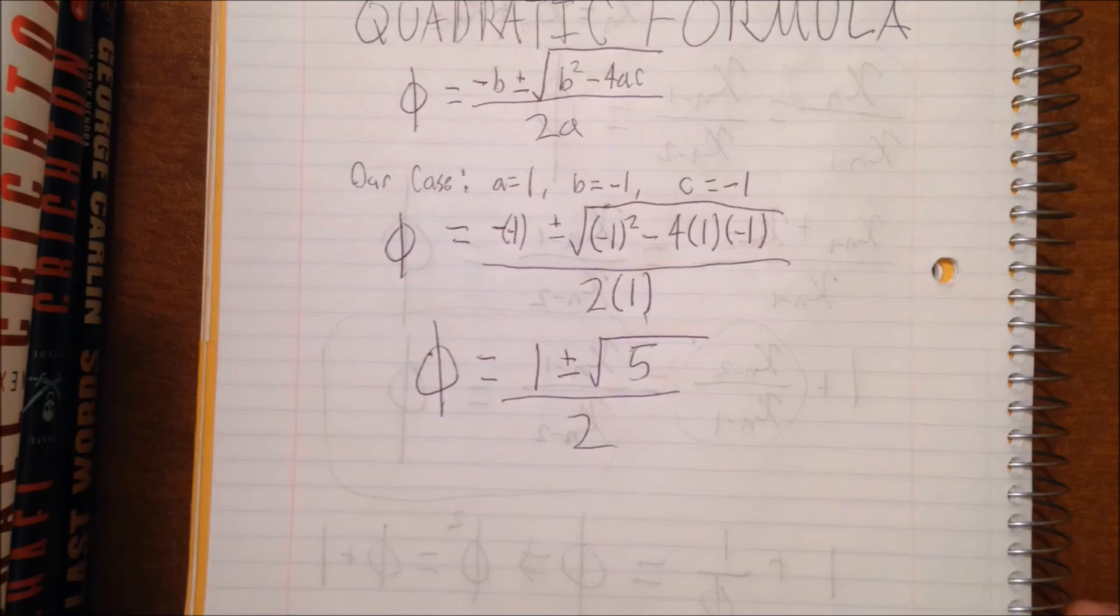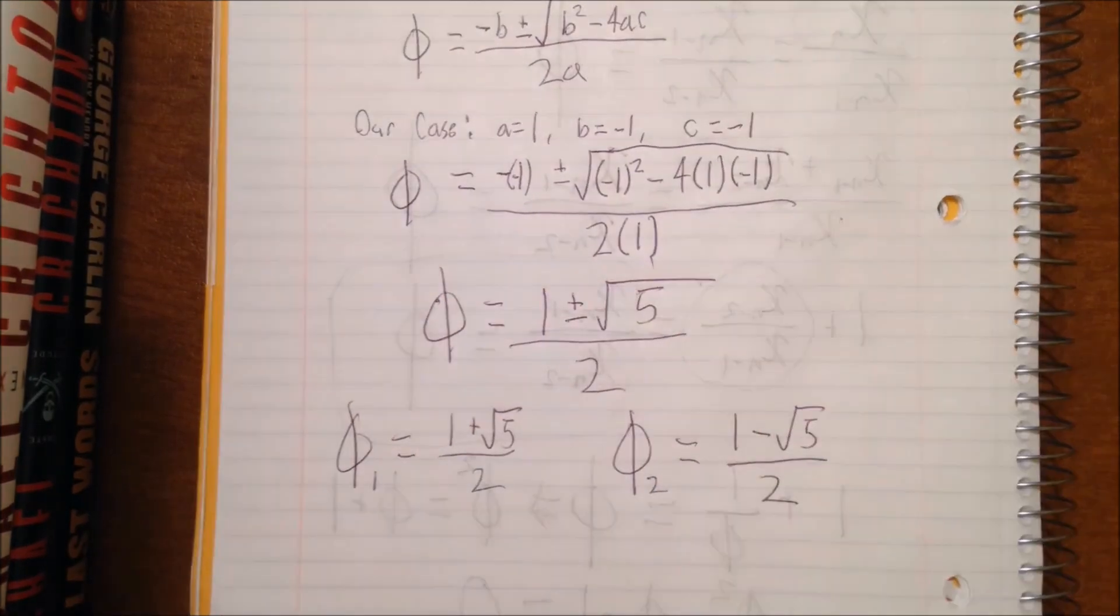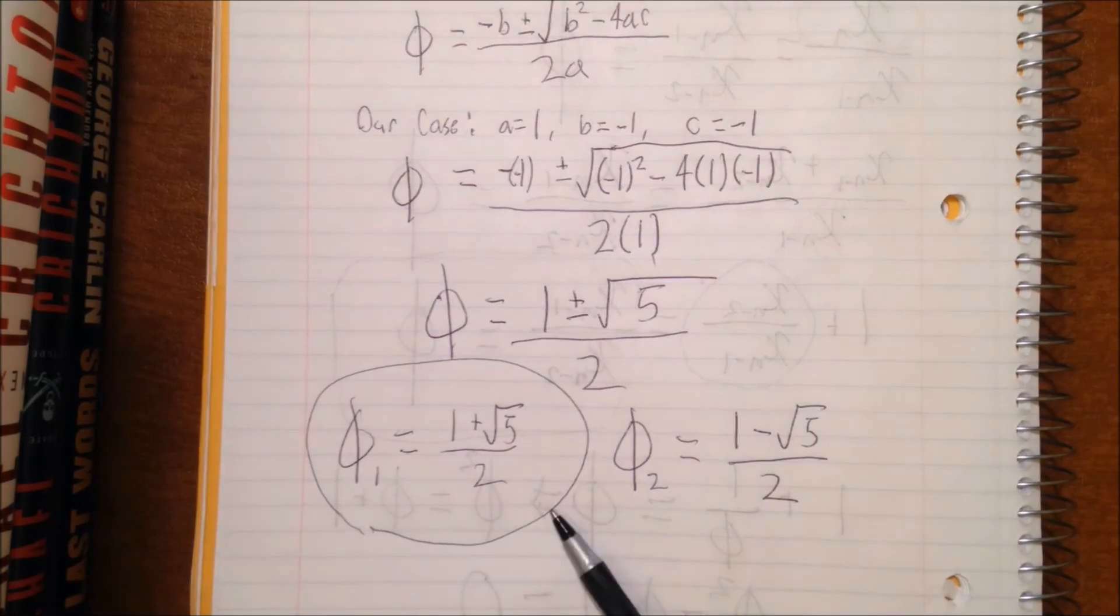Now this gives us two separate solutions: phi 1 is equal to 1 plus the square root of 5 over 2, phi 2 is equal to 1 minus the square root of 5 over 2. And we go with phi 1 because that gives us a positive answer and phi 2 would give us a negative answer.